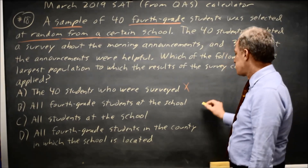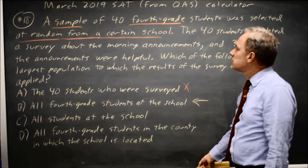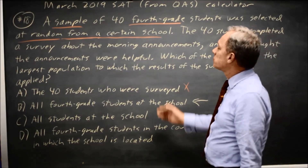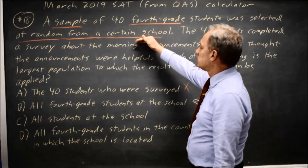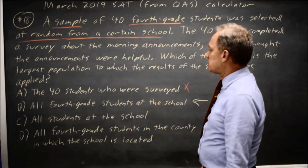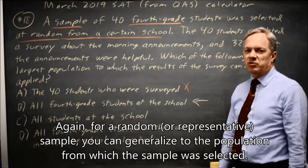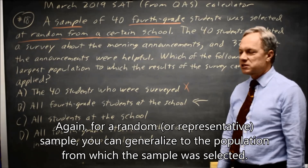So generalizing from the 4th graders who were sampled to all 4th graders at that school is like generalizing from 5 good grapes to a whole bunch that are presumably good grapes. This answer makes sense and is in fact correct, because our sample was drawn from 4th graders at a certain school, so we can generalize to the population from which our sample was drawn: 4th graders at that school.